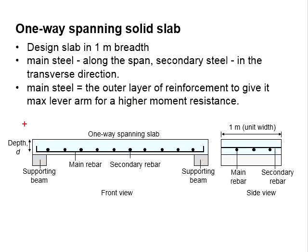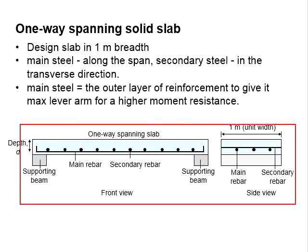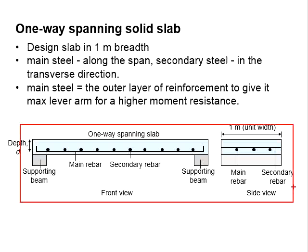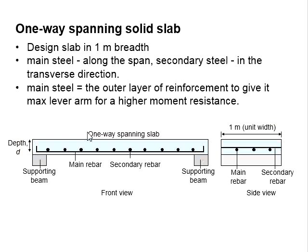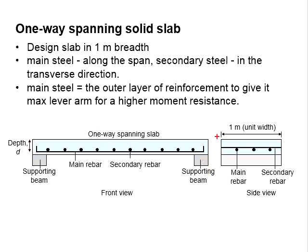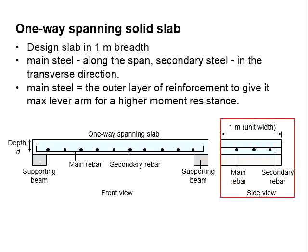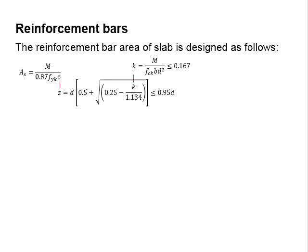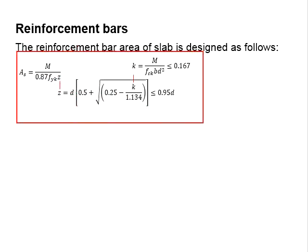This diagram shows a typical one-way span slab. This is the front view, and from the side view, the slab is normally designed as a 1 meter unit width. To determine the reinforcement bar area of the slab, these equations are used.